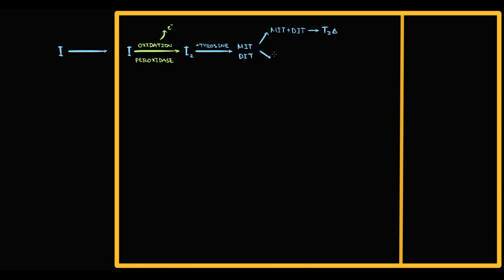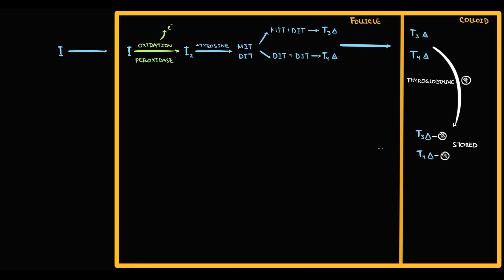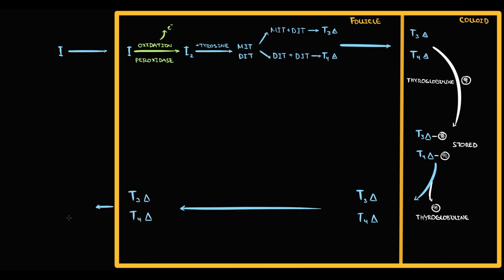After oxidation, follicular cells bind iodine to tyrosine, resulting in formation of monoiodotyrosine (MIT) and diiodotyrosine (DIT). One MIT and one DIT form triiodothyronine (T3), and two DITs form thyroxine (T4). T3 and T4 are then transported into the colloid, where thyroglobulin binds them for storage. When needed, thyroglobulin is cleaved and free T3 and T4 are transported into follicular cells and released into the blood.